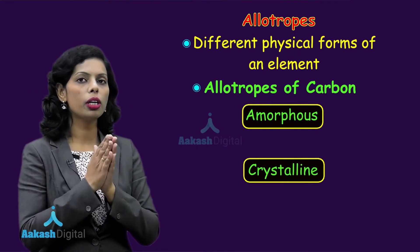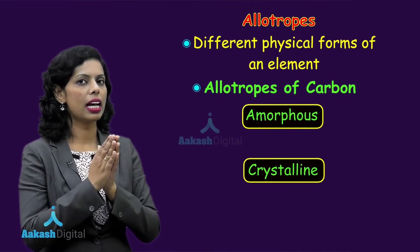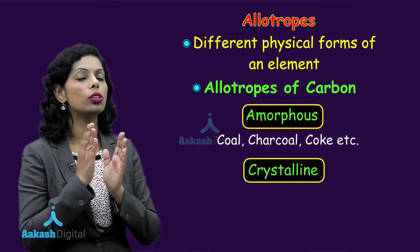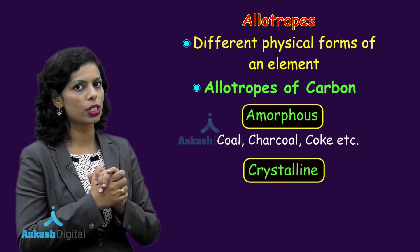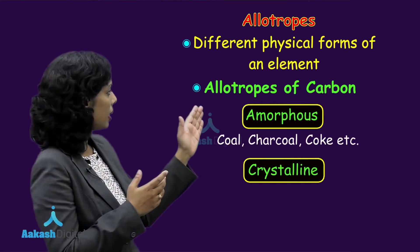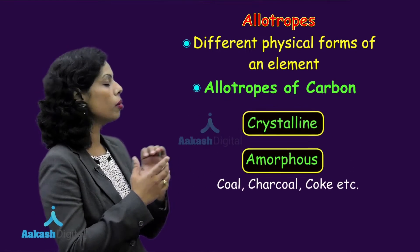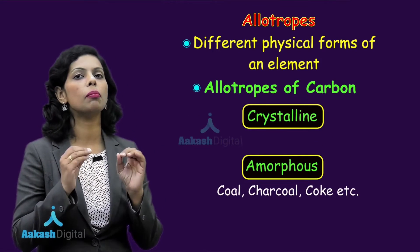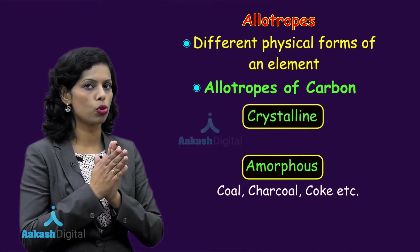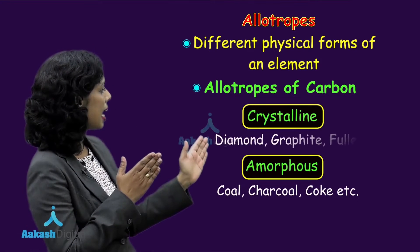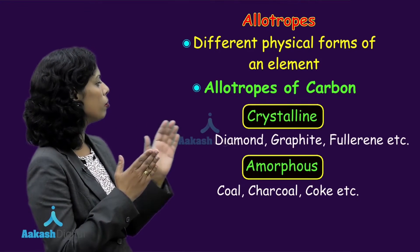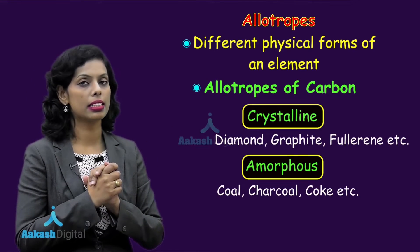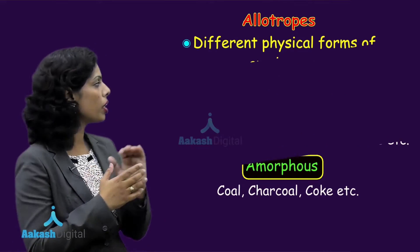If you are talking about the amorphous forms, we have the examples of coal, charcoal, coke, etc. And if we are talking about the crystalline allotropes of carbon, we have three main crystalline allotropes — diamond, graphite, and fullerene.